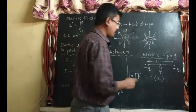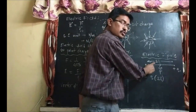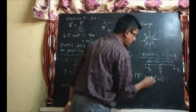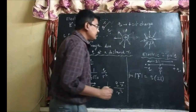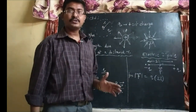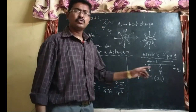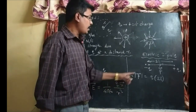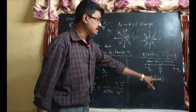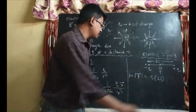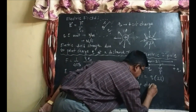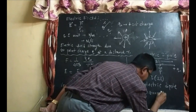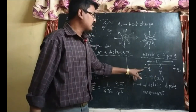Now, electric dipole: suppose there are two charges minus Q and plus Q, separated by a distance 2L. For symmetrical reasons we take 2L, so each half is L. An electric dipole is a system of two equal and opposite charges separated by a distance 2L. The electric dipole moment P is equal to the product of the magnitude of one charge and the distance 2L between the two charges. The direction of electric dipole moment is from minus Q to plus Q.